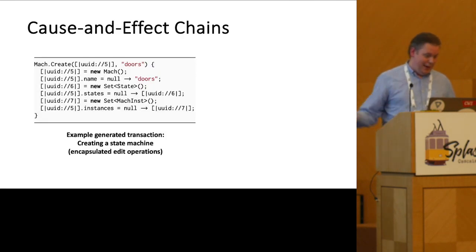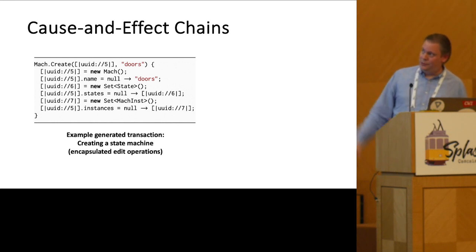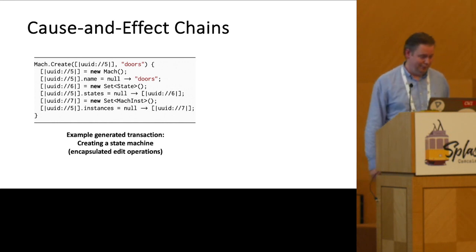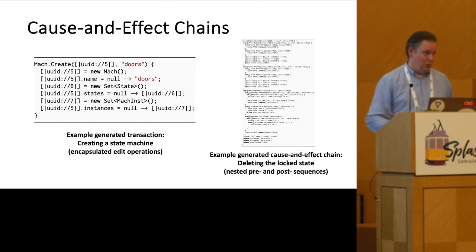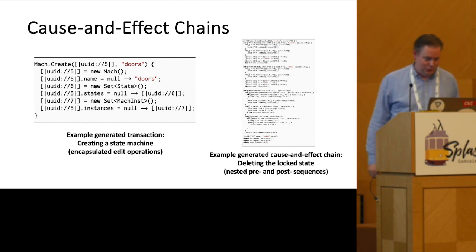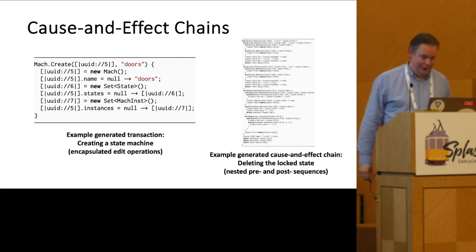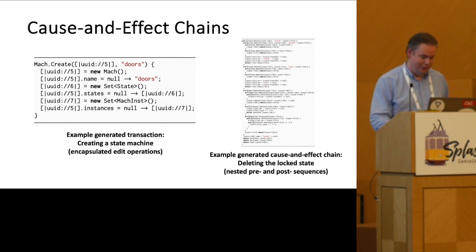Here's an example of a simple transaction — these are edit operations encapsulated in a create event expressing what the change is. Here's a more complex one with nested pre and post clauses. This is actually deleting the current state of a state machine where running state machines all migrate, and in the end you arrive at a new valid state based on all the side effects that are programmed.